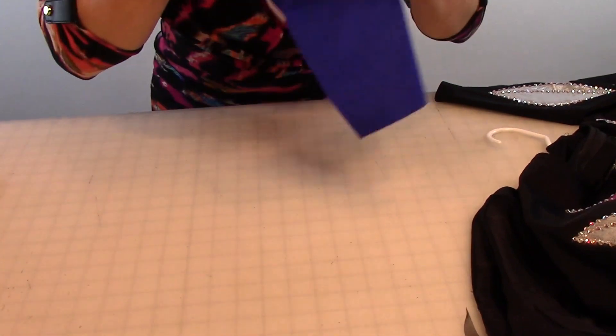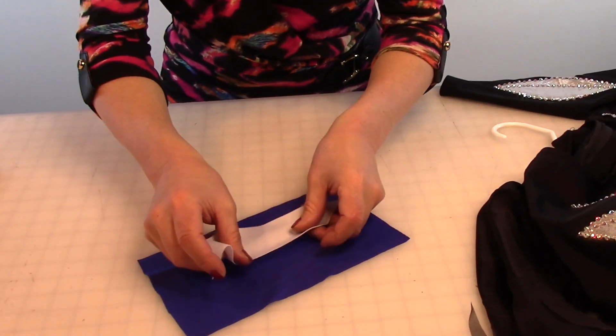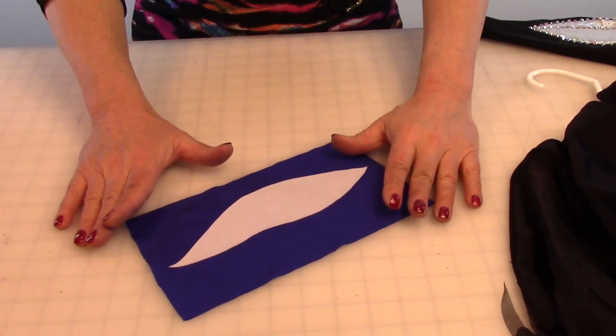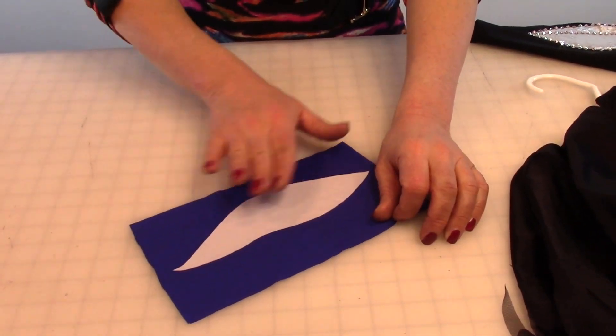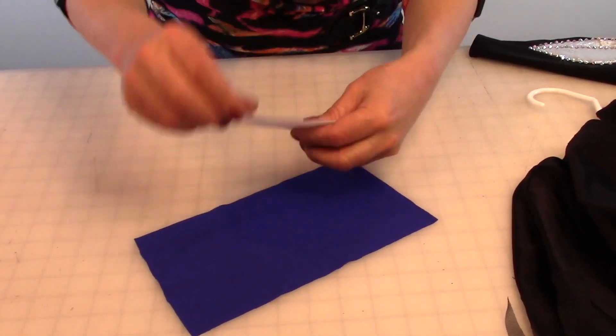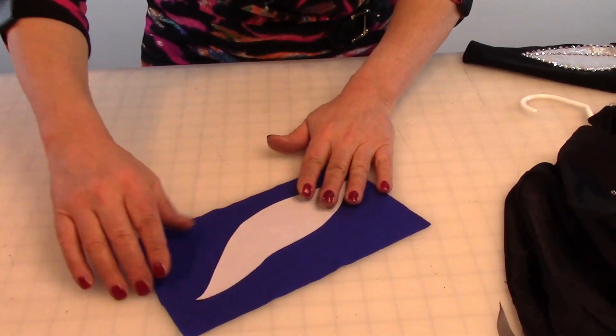And then you just lay it right onto your costume. Now, if you've got a lot of intricate pieces and you want to keep them all in the correct area, you can also use spray adhesive and just spray adhesive the back and then stick it on a little bit.